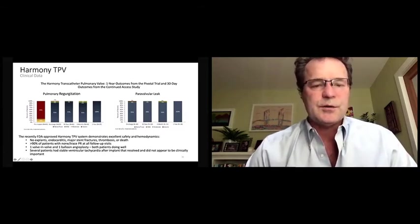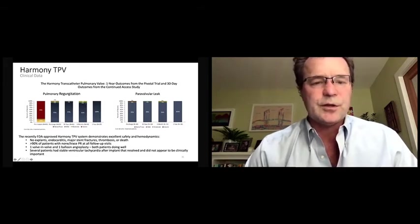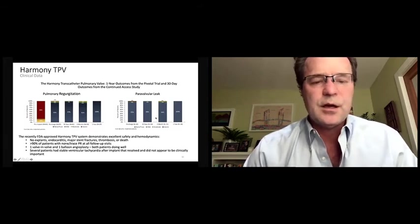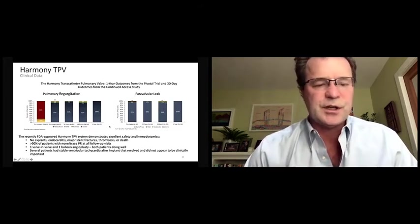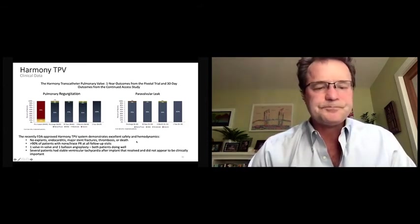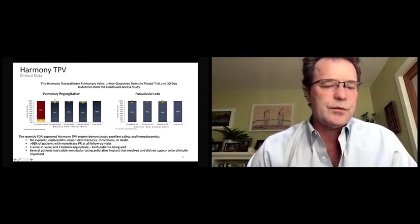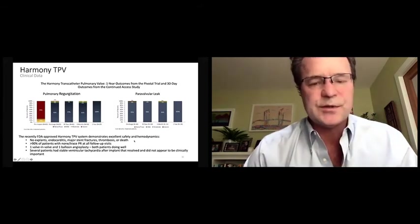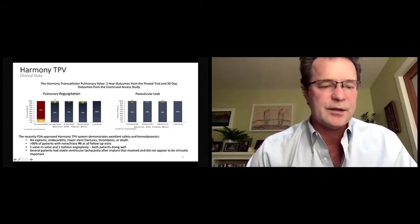And as you can see here, at six months in a year, there's really almost very little pulmonary regurgitation or paravalvular leak at all. There's no significant obstruction and none of these patients have undergone re-operation. No endocarditis, no major stent fractures, no thrombosis, no death, no procedural adverse events of any of those kinds either.